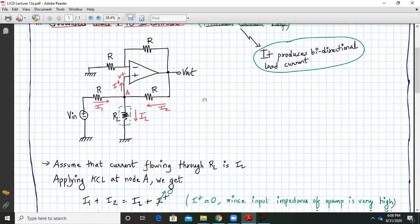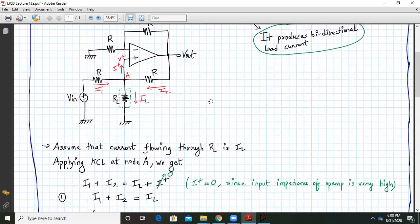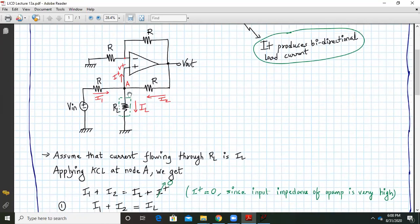Here we assume the current flowing through RL is IL and we first of all apply KCL at node number A. KCL means incoming current is equal to outgoing currents. In this case, the incoming currents are I1 and I2 and outgoing currents are I plus and IL.